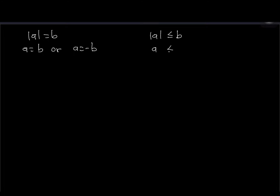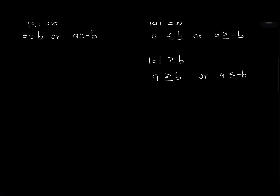Similarly, absolute of a greater than or equal to b gives a greater than or equal to b, or a less than or equal to negative b. These three statements are very key to what we're going to do today.